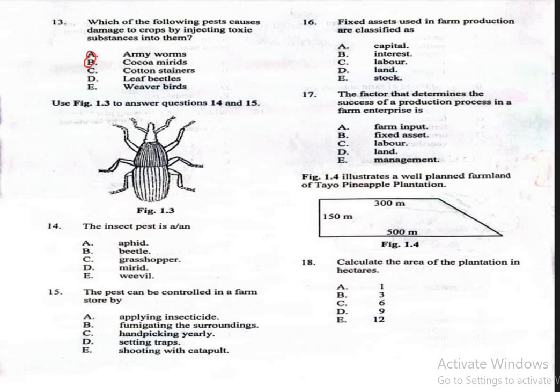Use figure 1.3 to answer questions 14 and 15. Question 14 says, The insect pest is: A. Aphid, B. Beetle, C. Grasshopper, D. Myriad, E. Weevil. The correct answer is Weevil, which is option E.